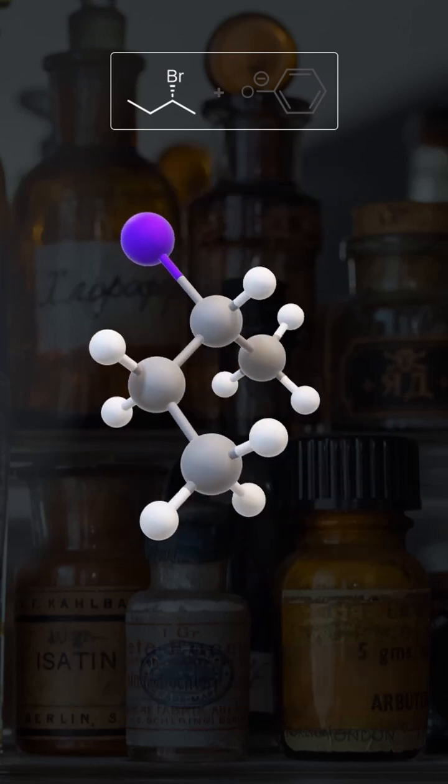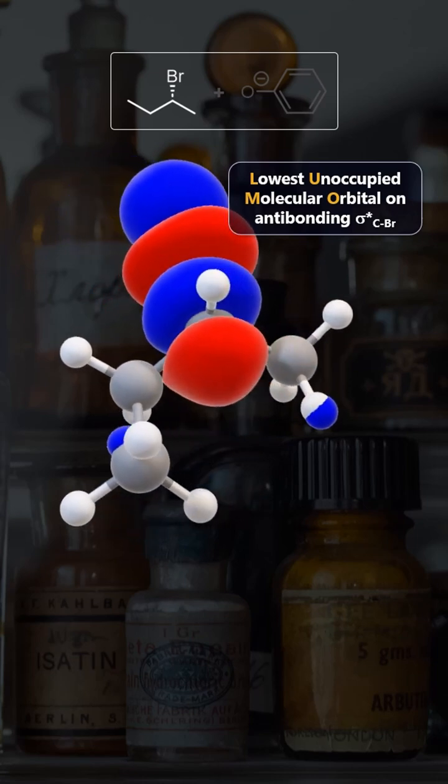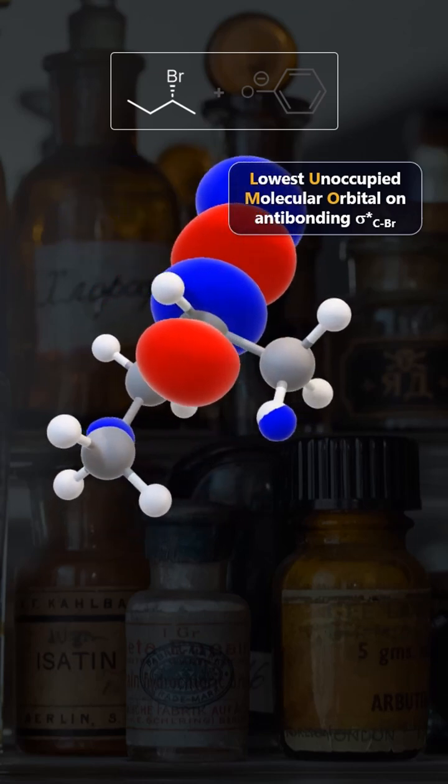Electrophiles provide the LUMO for reactions. In this case, it's the antibonding sigma star orbital between the carbon and our leaving group.